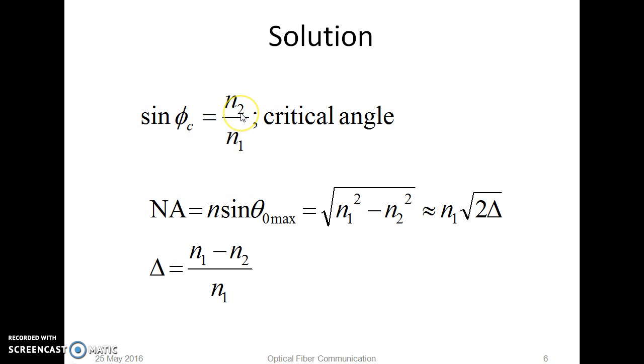We can calculate this critical angle of incidence using this formula. As we are given the core and cladding refractive index, we can use them in this formula and calculate sin φc, and from that φc can be calculated as sine inverse of n2 by n1. Similarly, numerical aperture can be given by the formula square root of n1 square minus n2 square.